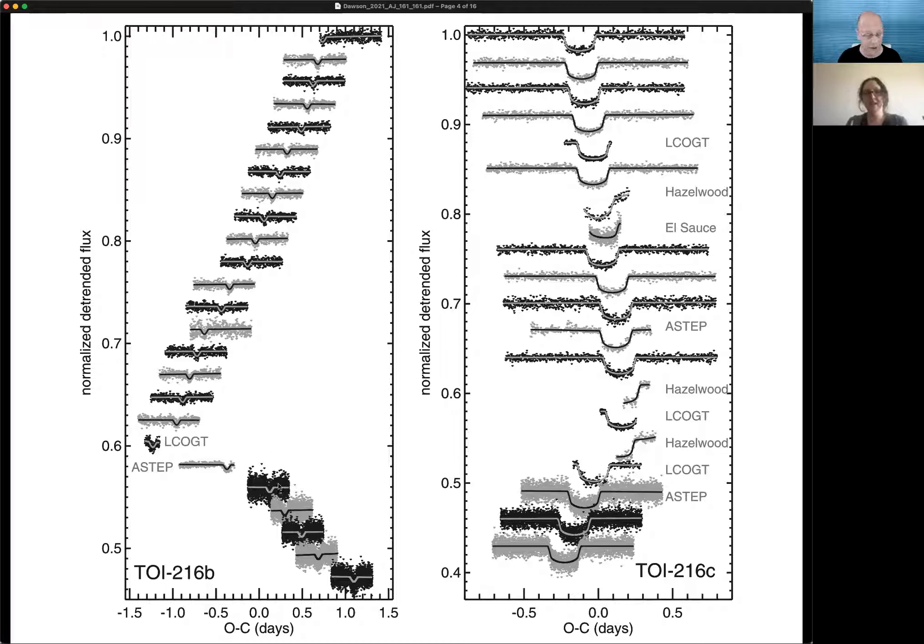These are phased to a constant linear ephemeris, if the planet's orbital period was constant. So the fact that these light curves are shifted to the left and right is a manifestation of their transit timing variations, the fact that they sometimes arrive early and late. So why don't we take a look at figure seven now?